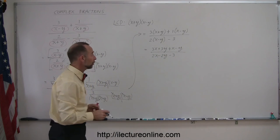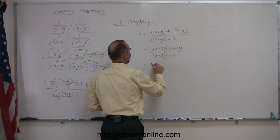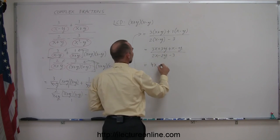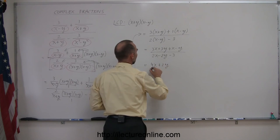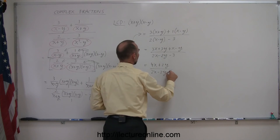And then, collecting common terms, 3x plus x is 4x, 3y minus y is plus 2y, and here we have a 2x minus 2y minus 3.